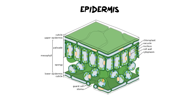Now we move on to the epidermis, which is the first of our permanent tissues. In this picture the epidermis is grouped together with a lot of other cells and tissues. Looking right at the surface we see there is a cuticle, then upper epidermis, and you've also got a lower epidermis and a lower cuticle. I'm going to talk about those first two: the cuticle and the upper epidermis.